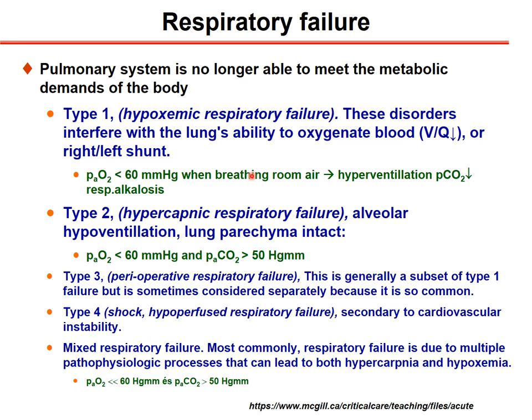The carbon dioxide diffusion capability is 50 times better than oxygen. So when the patient is suffering from hypoxia, hypoxia stimulates the breathing center and the patient responds by hyperventilation, removing CO2 from the blood. This way the patient develops hypocapnia and respiratory alkalosis.